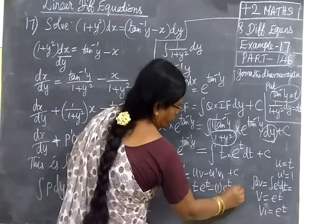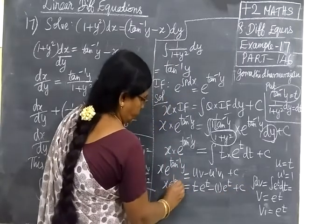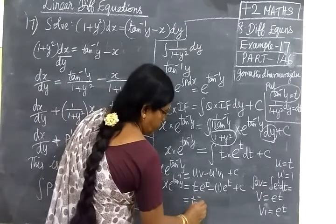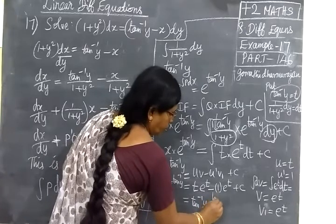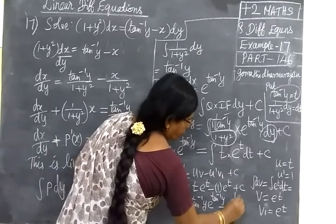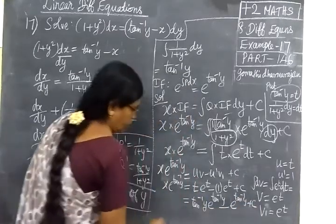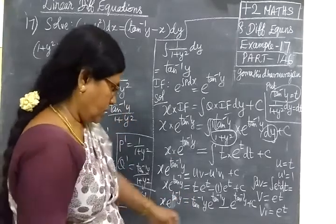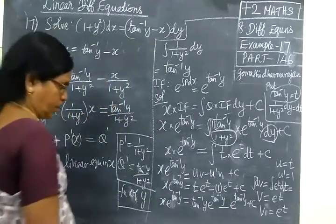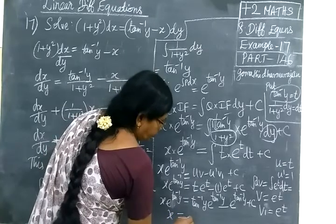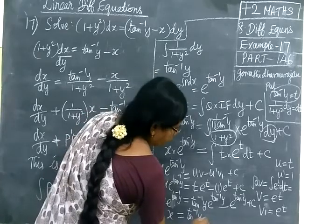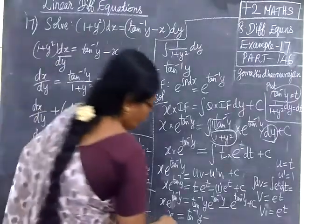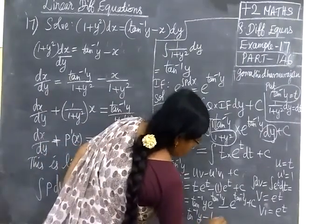So v1 equals e to the power t plus c. Now substituting back, t equals tan inverse y. We get: x times e to the power tan inverse y equals tan inverse y times e to the power tan inverse y minus e to the power tan inverse y plus c. Taking e to the power tan inverse y as common and cancelling, the remaining is: x equals tan inverse y minus 1 plus c.